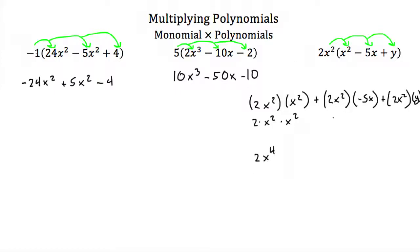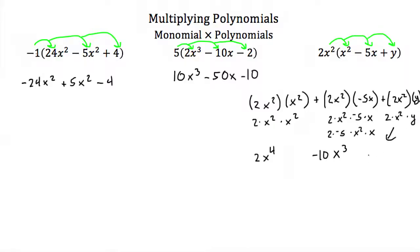2x squared times negative 5x would be 2 times x squared times negative 5 times x, or 2 times negative 5 times x squared times x. 2 times negative 5 is negative 10, and x squared times x is just x cubed. And for the last term, we just have 2 times x squared times y, which can't be simplified much, so that's just positive 2x squared y. Our final answer then would be 2x to the fourth minus 10x cubed plus 2x squared y.